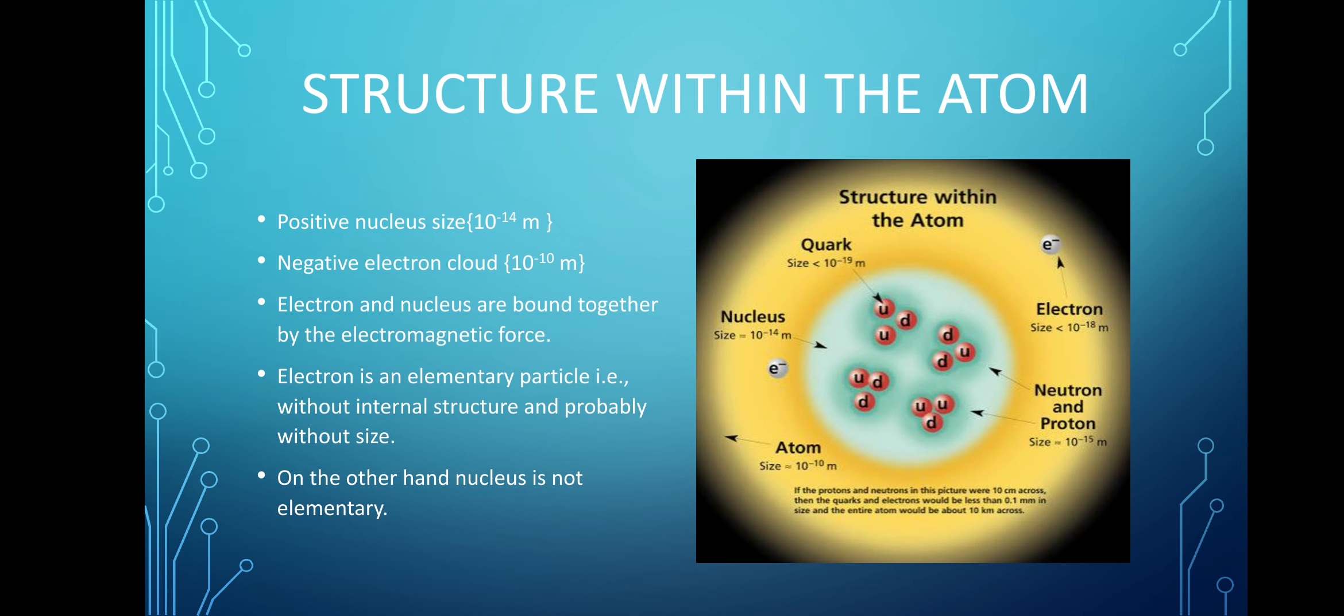Within an atom, we encounter our first fundamental elementary particle in the electron cloud, i.e. electron. So far, they do not have internal structure and probably they are without size. Where electron is an elementary particle, nucleus is a composite particle.